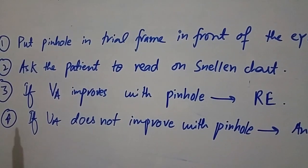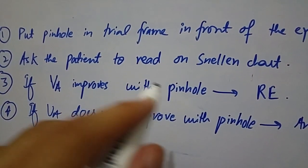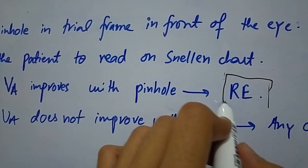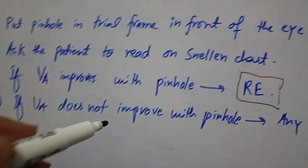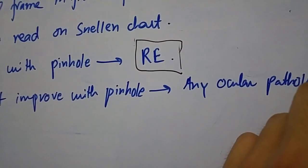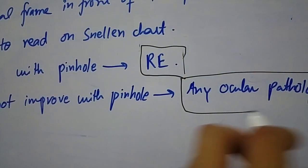Now what you have to note is that if visual acuity improves with pinhole, it means that decreased vision is due to refractive error. But if visual acuity does not improve with pinhole, that indicates that the patient has any ocular pathology or any neurological disease.